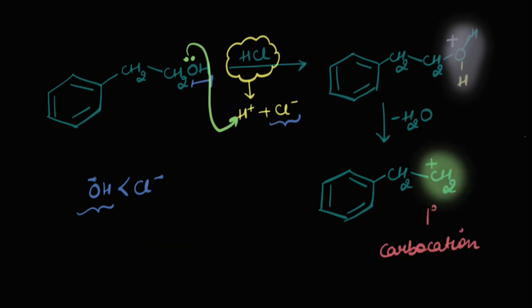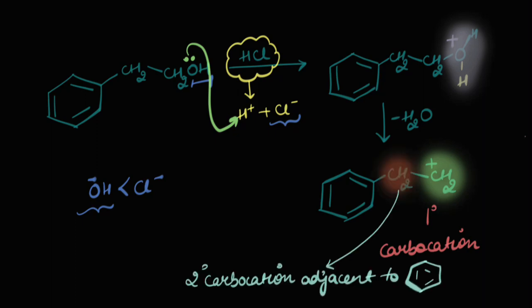Here, this carbocation is a one degree carbocation. If by any chance I'm able to bring this positive charge to the middle carbon, it would be a two degree carbocation adjacent to the benzene ring. Hey, much more stable, right? Can I do that? Let's see.